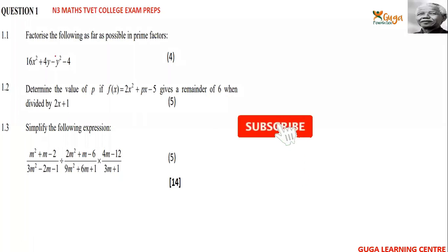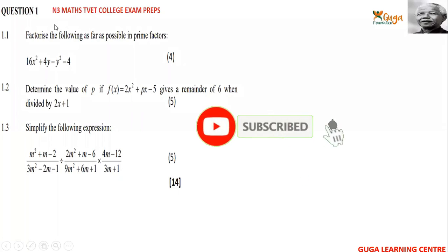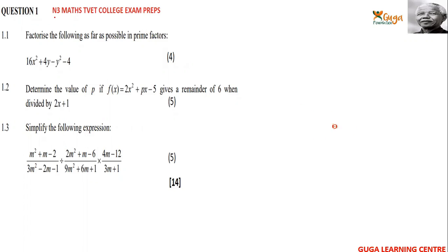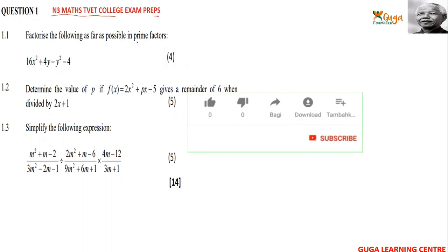Welcome back — don't forget to subscribe and share. Today we'll be doing N3 Mathematics TV College exam preparations. The first question, 1.1, says: factor the following as far as possible in prime factors.